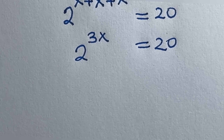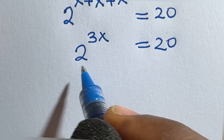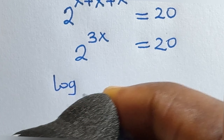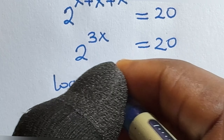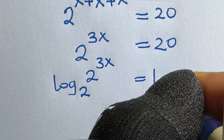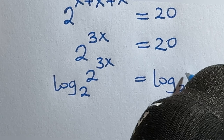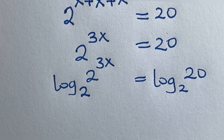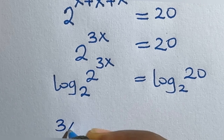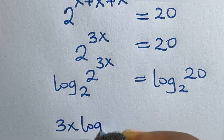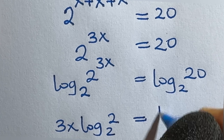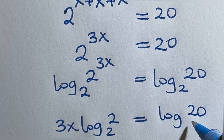To solve for x, take the logarithm of both sides of this new equation. You can take the logarithm to base 2 to make it easy. So you have log base 2 of 2 raised to power 3x is equal to log base 2 of 20. This way I can transfer 3x to the front, giving 3x times log₂2 equals log₂20.